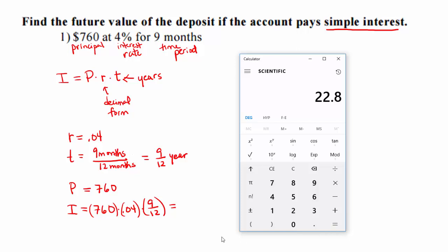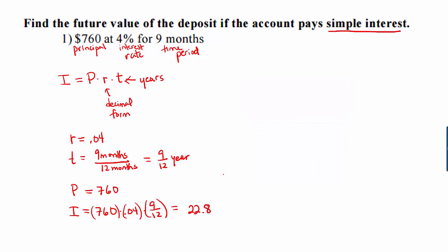Now what is that that we just found? That 22.8 is the amount of money earned in interest, so it's not actually the future value of the account. We started with $760, and we've added $22.80 in interest, which means the future value of the account is $782.80.